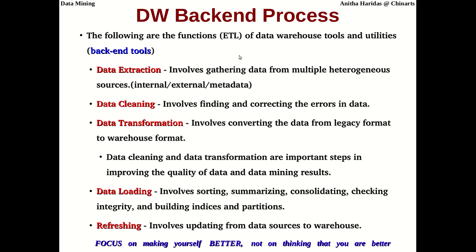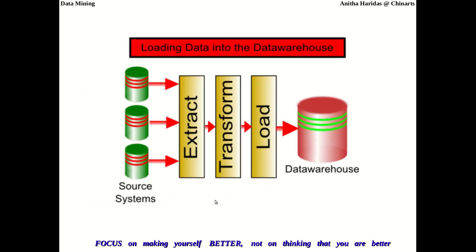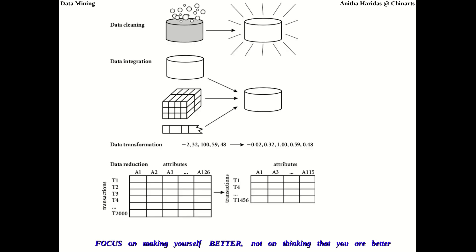The different functions available as back-end tools in a data warehouse model are: data extraction, data cleaning, transformation, loading, and refreshing. These back-end tools work as follows: the data will be cleaned, integrated, transformed, and in some cases reduced, before it is loaded into the data warehouse.